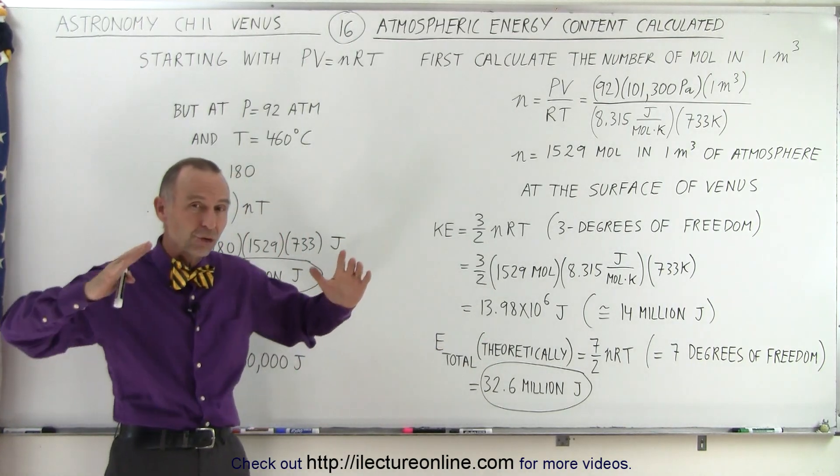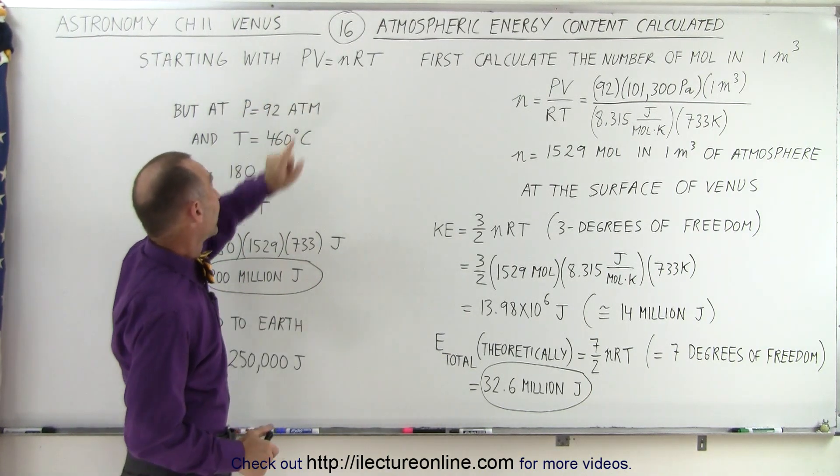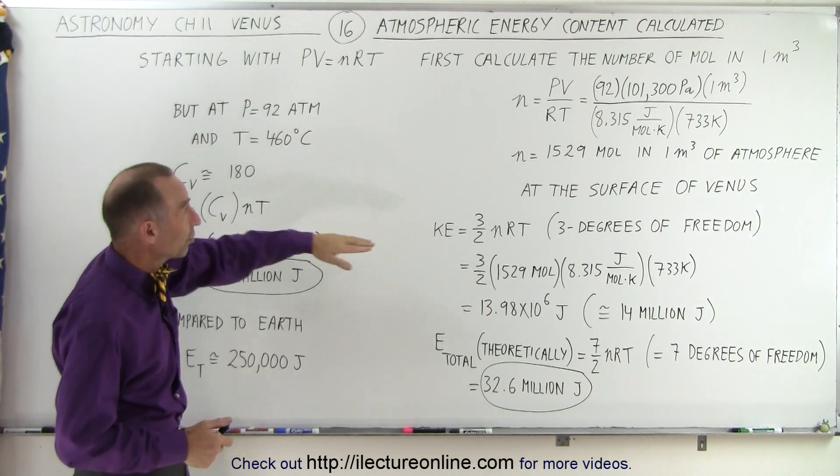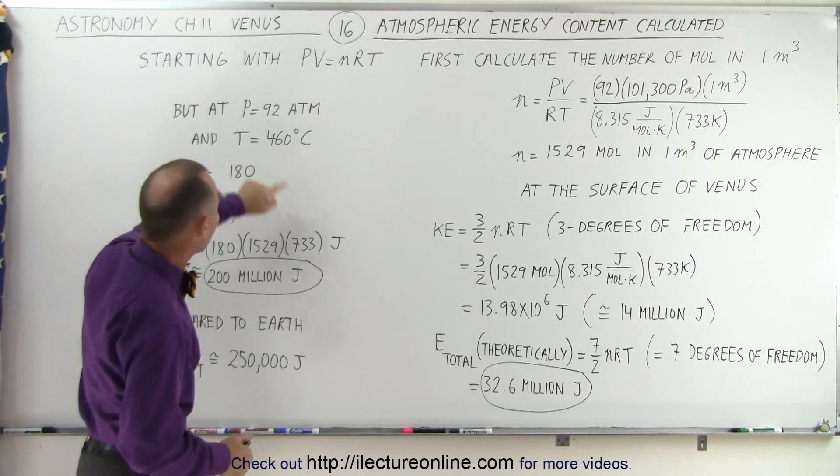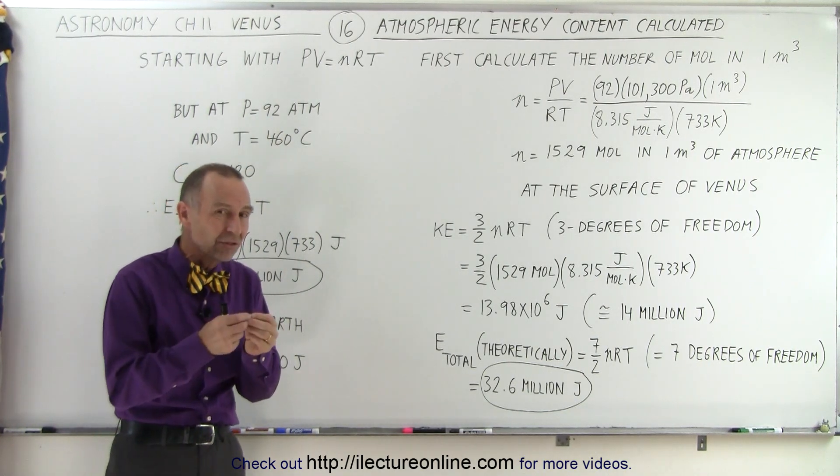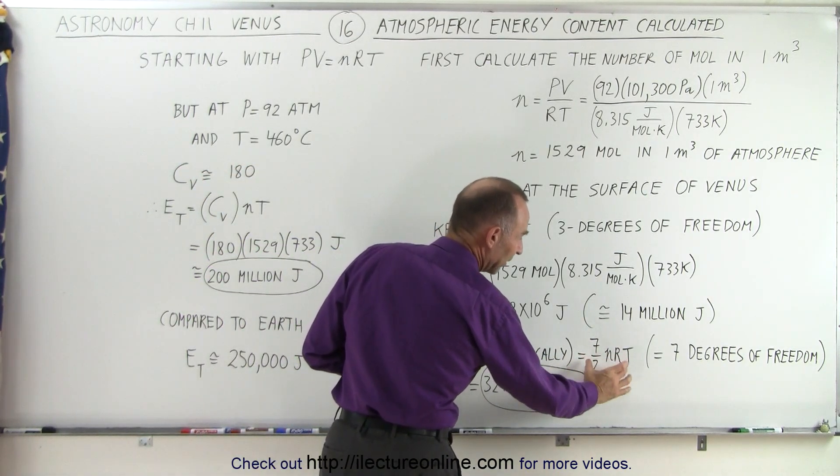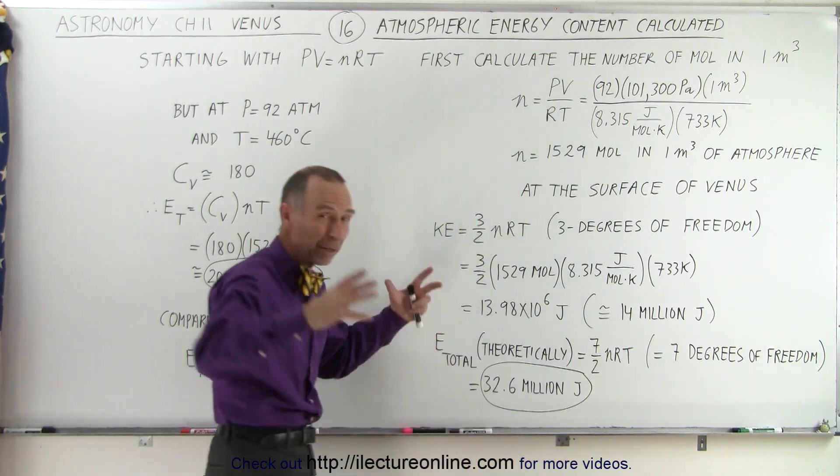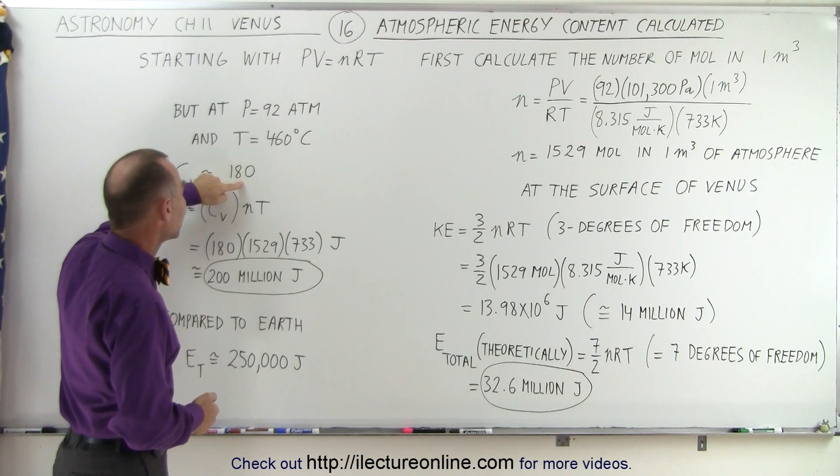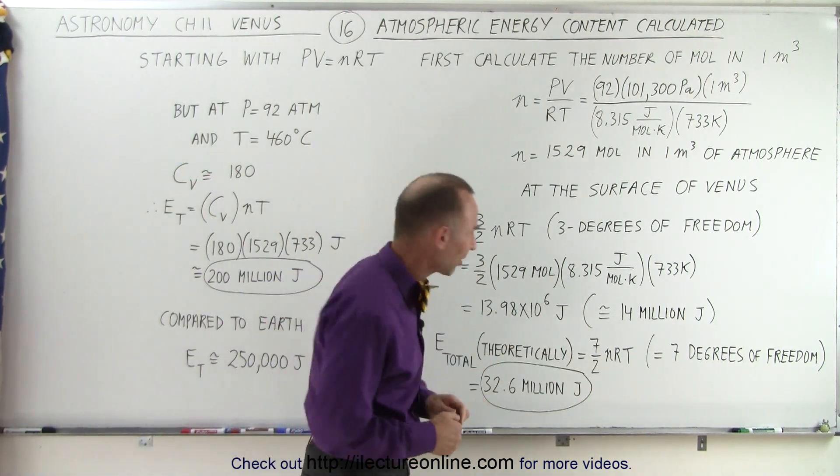But then we realize, because of the enormous compression, the enormous pressure of 92 atmospheres, at a temperature of 460 degrees centigrade, which is 733 Kelvin, and a pressure of about 92 atmospheres, the C sub V, the specific heat, which is basically 7 halves times R, that would be the typical value theoretically, but because of the enormous compression, the C sub V is much higher. It's around 180 rather than 7 and a half times 8.3. So let's calculate that for a moment.